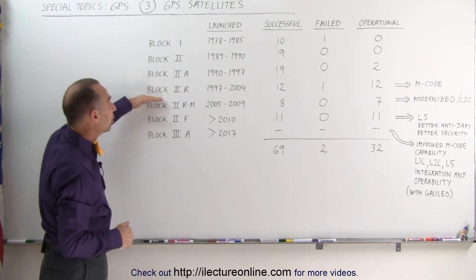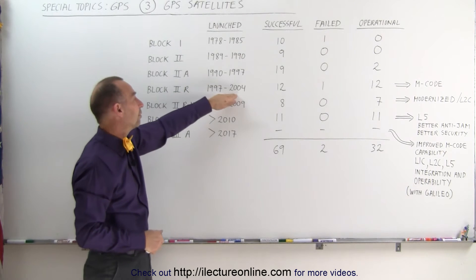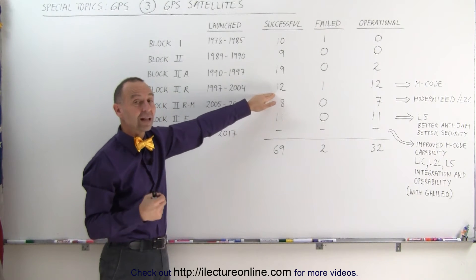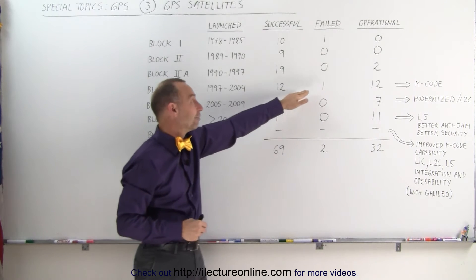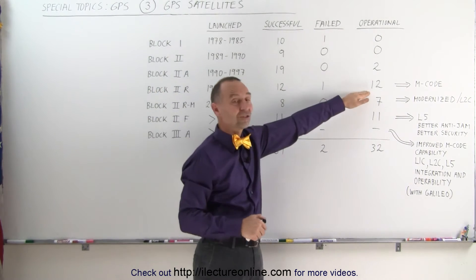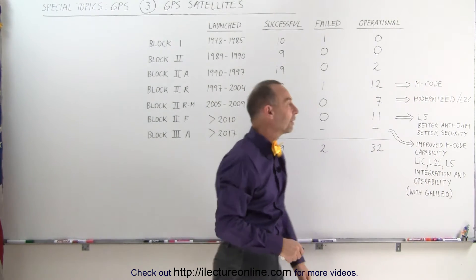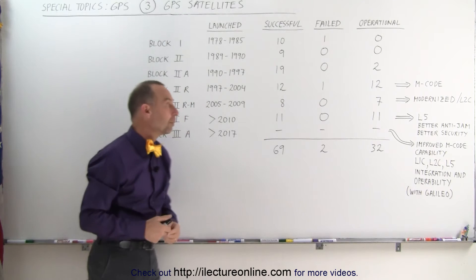We have the Block IIR. The Block IIR was an introduction back in 1997 to 2004 of 12 additional satellites that were successfully launched. Unfortunately one did not make it up there, but all 12 of them are still in service and they're now providing the new M code. M stands for military code which gave them additional capability.